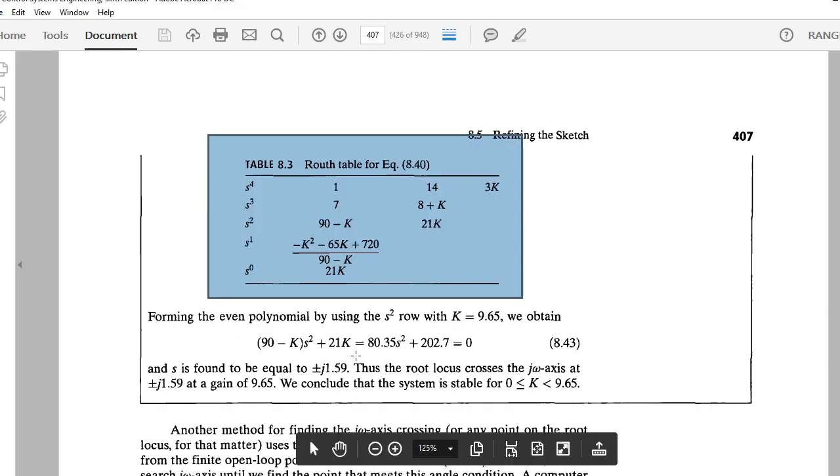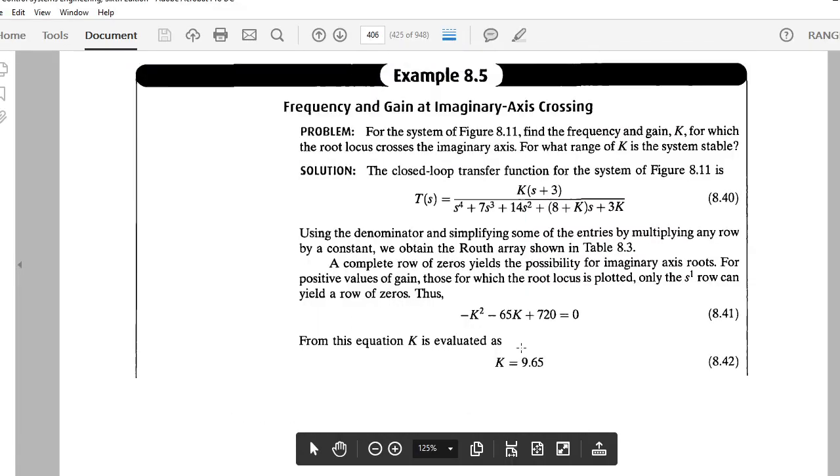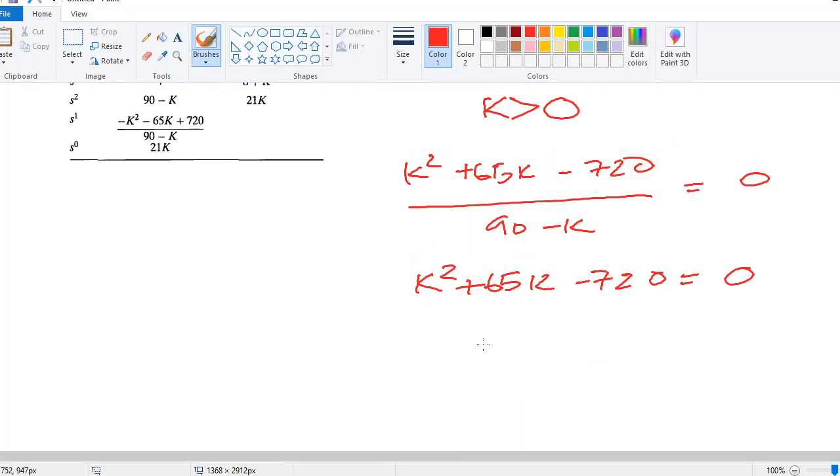If you find the roots of this equation, you should get two values of K. They have done that for us here. And they have found that there are two values. We are only going to consider the positive value of K, which makes it to be zero. The positive value of K, which makes this equation to be zero, is K equals 9.65.